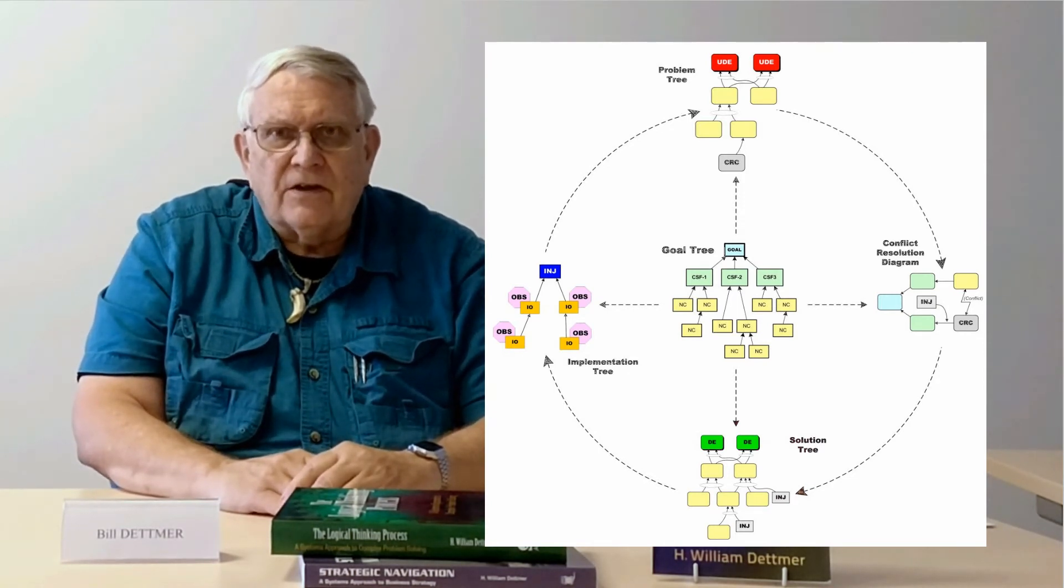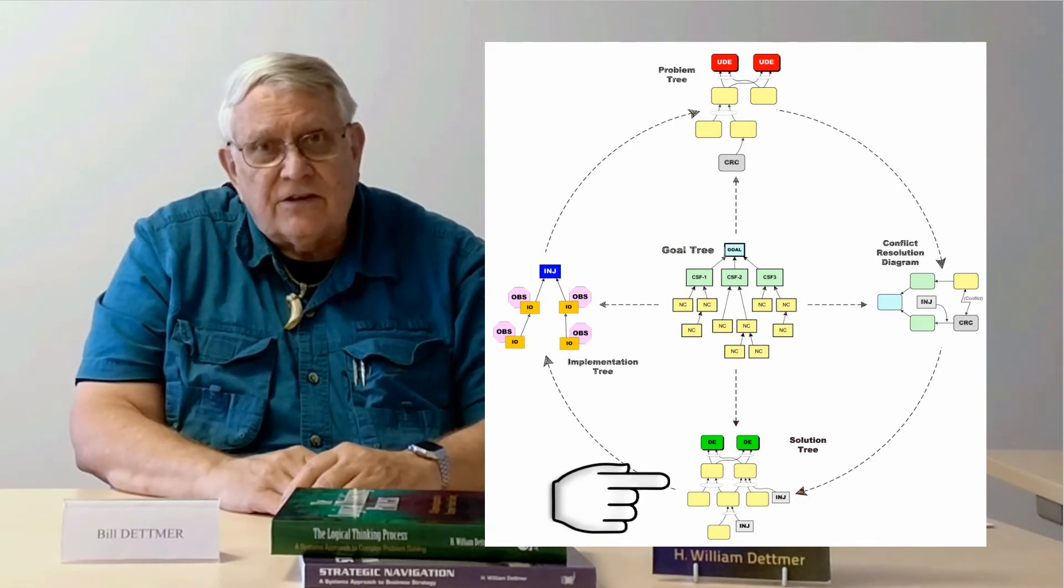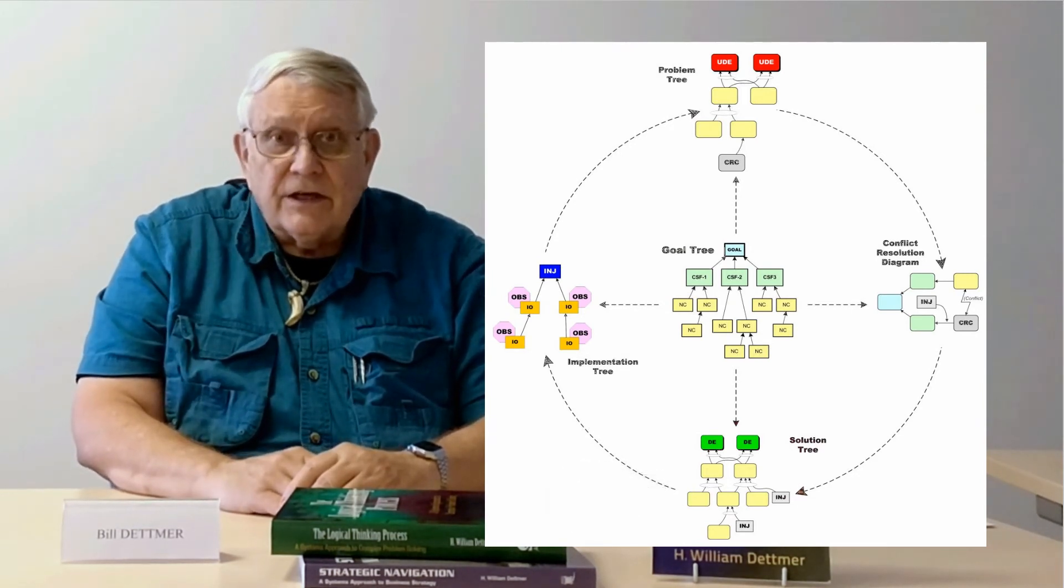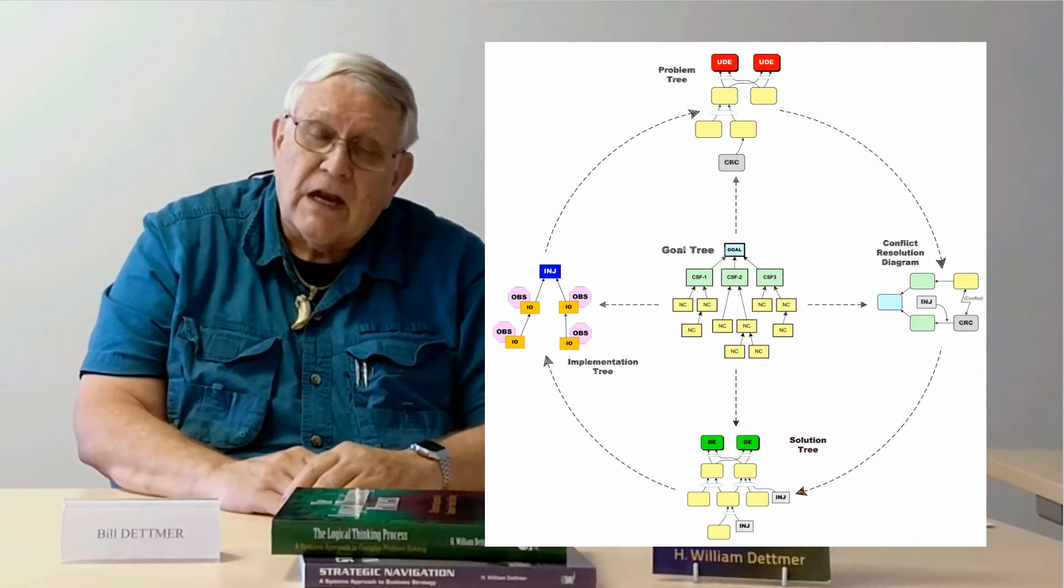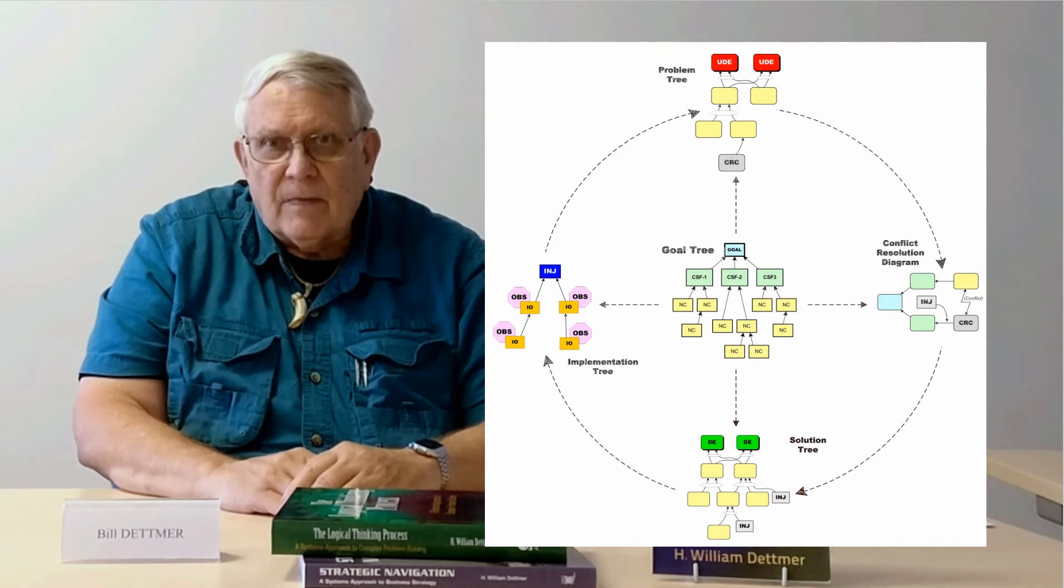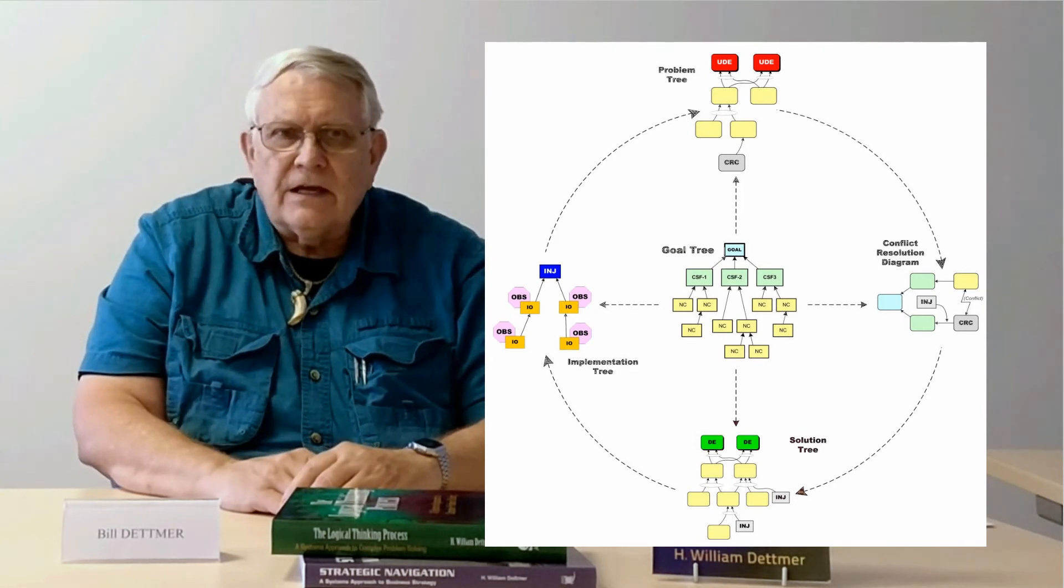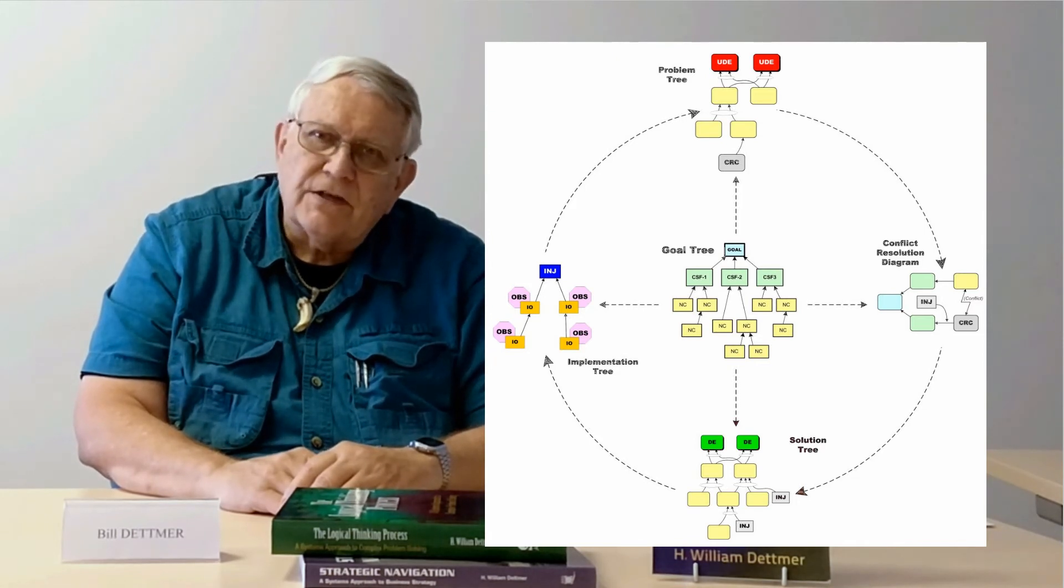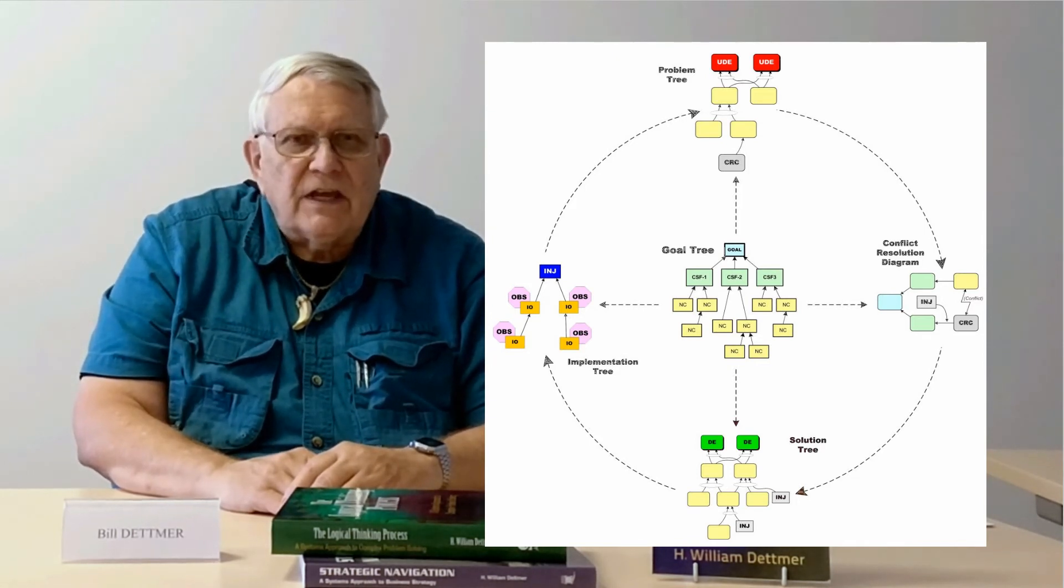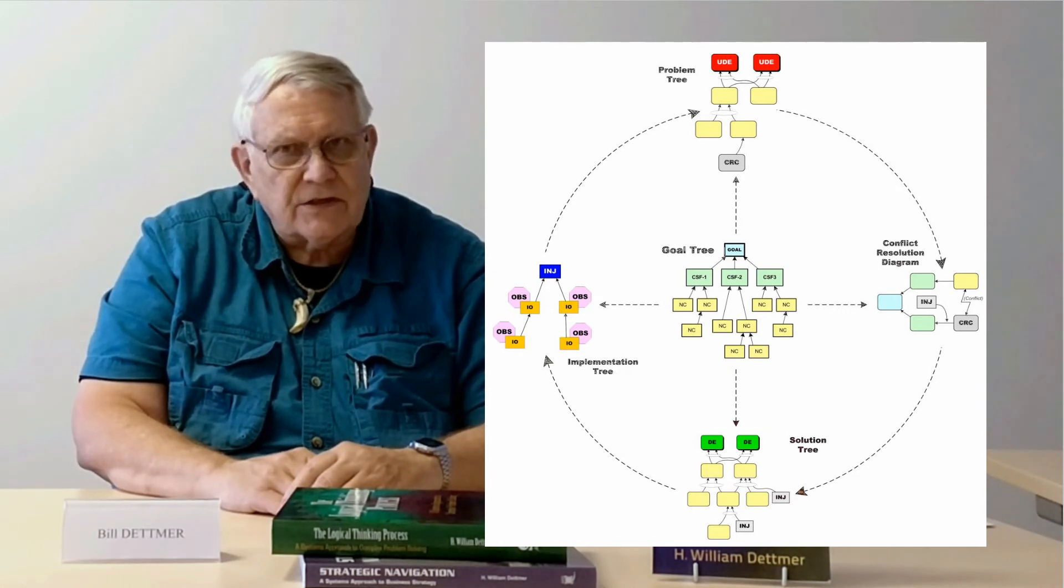The next step in the logical thinking process, the future reality tree, is intended to do just that. It shows in detail how our brilliant idea will play out if we try to implement it. The best part is that we can test our idea logically in a kind of tabletop exercise before we risk spending time and resources on an idea that might have a low chance of success.